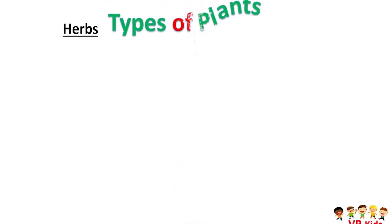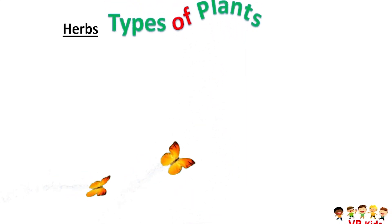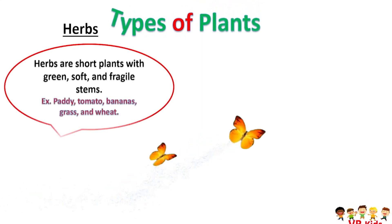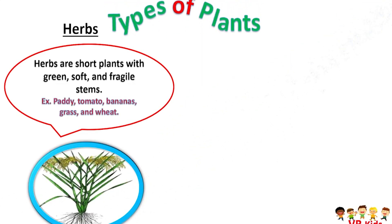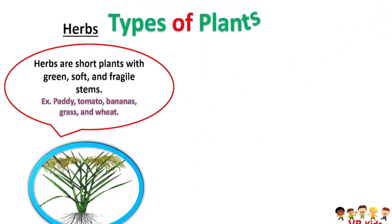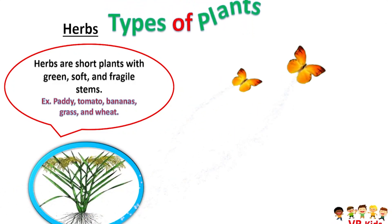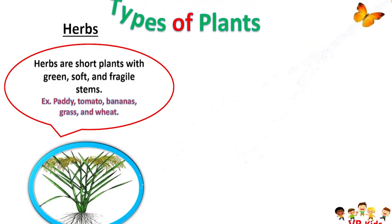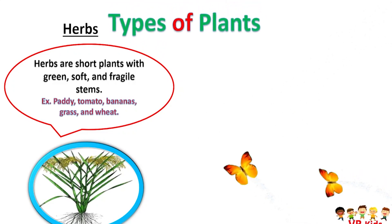Now we will see types of plants. First, herbs. Herbs are short plants with green, soft and fragile stems. Examples: paddy, tomato, banana, grass and wheat.